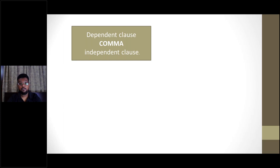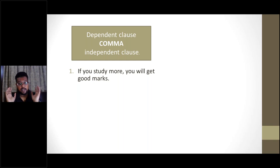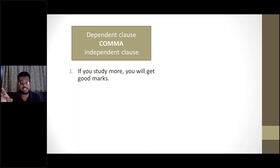For example: 'If you study more' is a dependent clause — if you study more, then what? 'You will get good marks' is an independent clause. So whenever we have a dependent clause followed by an independent clause, we place a comma in between — always. Dependent clause, independent clause — there should be a comma in between.